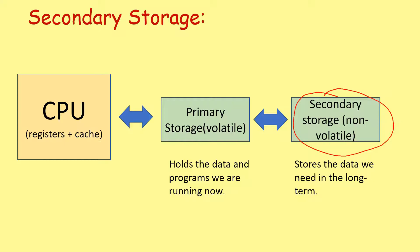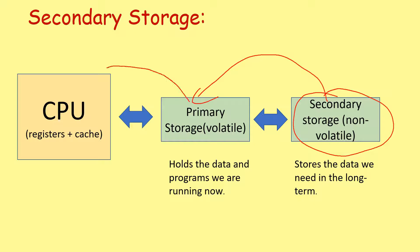We keep our programs and data here for long-term storage. We save everything to our hard drive or SSD, and then when we double-click on something to open it, it gets stored into our primary storage. So it gets moved from the secondary storage — your hard disk drive, for example — to your primary storage, which would be your RAM. And then from your RAM, a program will be transferred line by line to your CPU into the cache first.